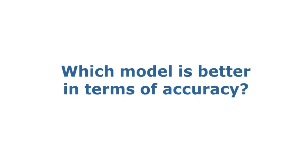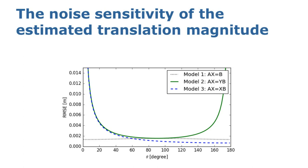Now the question is, among the three models, which one is more accurate? To answer this, we use error propagation to analyze the noise sensitivity of the estimated translation magnitude for each model. As a result, we can analytically compare their calibration accuracy.